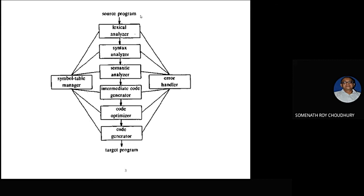Then comes the code optimizer — the next stage — which is meant for your target machine. How many registers are there, and all those things, then the actual code will be generated. Code generation means two stages: intermediate code and code generator. Compiler writing is a full-fledged job done by expert programmers, using techniques like dynamic programming, randomized programming, or artificial intelligence, because code optimization involves all of these.